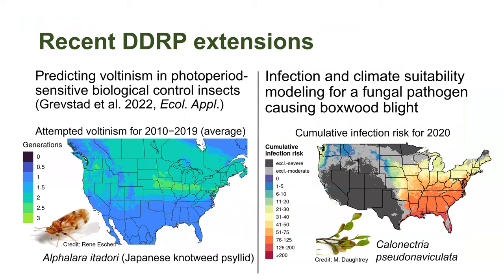Some versions of DDRP include additional factors besides temperature. The three biocontrol insect models include photoperiod factors — species like Japanese knotweed psyllid are sensitive to day length, which varies throughout the year and latitudinally. These insects enter and exit diapause in response to day length. These models predict voltinism and photoperiod sensitivity, and this work was published by Fritzie Grevstad in 2022 in Ecological Applications.